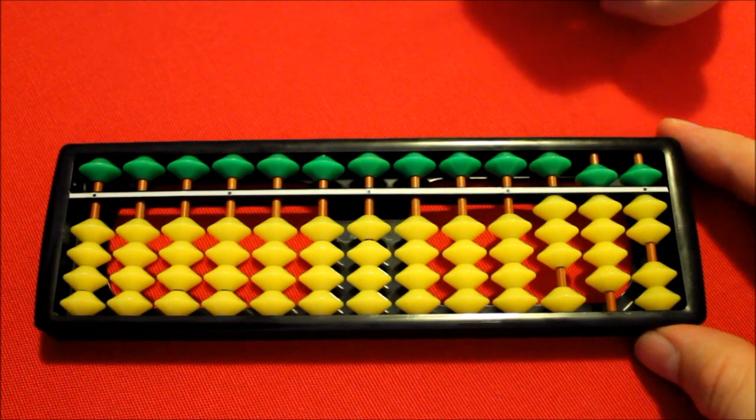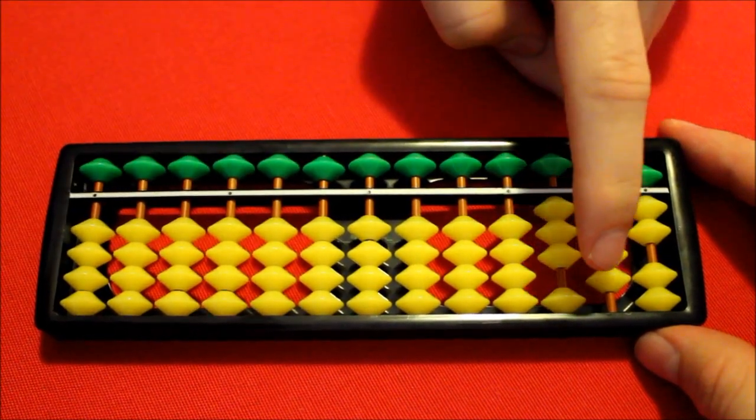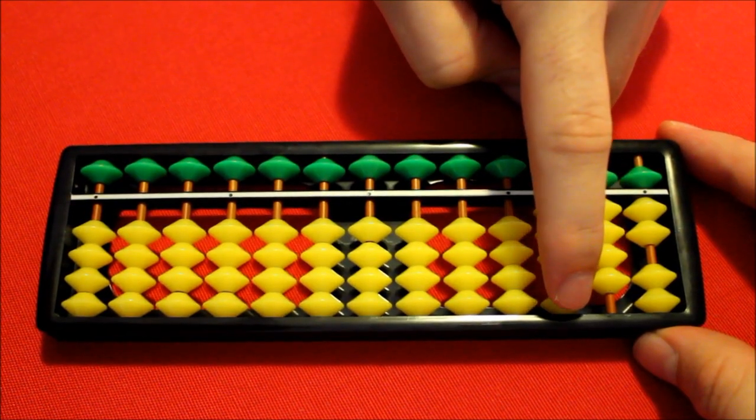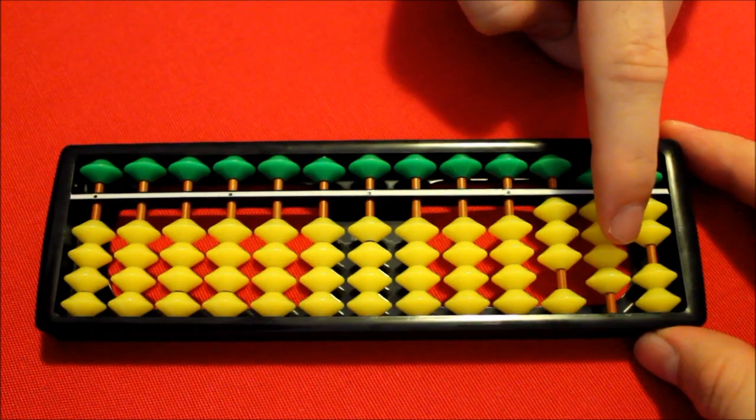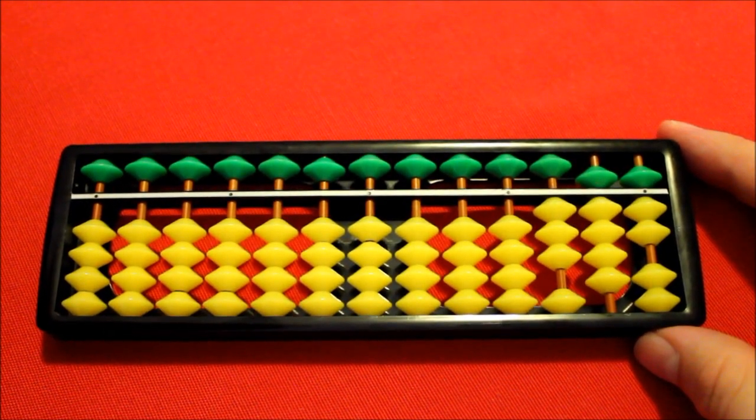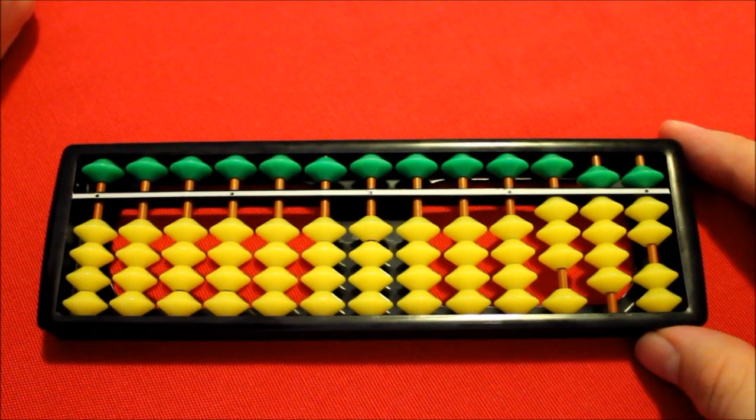Lastly, what if I wanted to add a further 222? Well, we run into a problem. There's only one earthly bead that I can touch here, and there's none in this column here. Now, I'm sure that you can start to think of ways around this, but all of a sudden, the soroban doesn't look so easy or elegant to use.